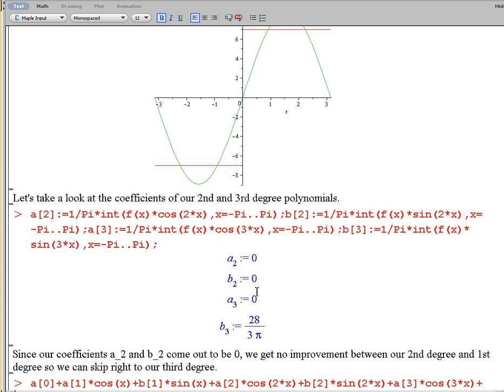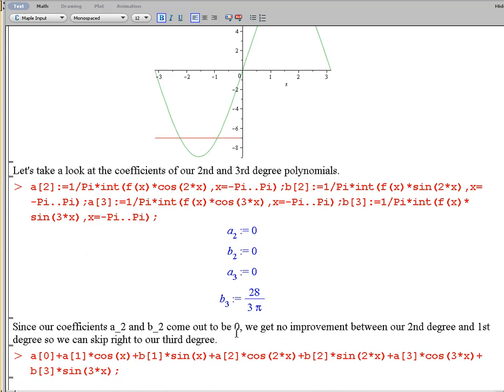Now notice a sub 2 and b sub 2 come out to be 0, so they're not going to add anything to our Fourier approximation. So there's no point in doing a second degree. So we'll go straight to doing a third degree.